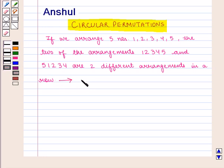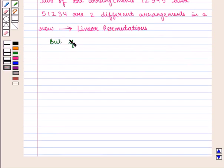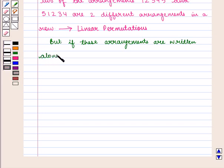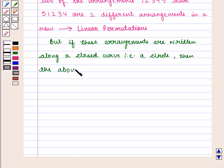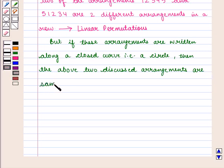This type of permutation is known as linear permutations. But if these arrangements are written along a closed curve, i.e., a circle, then the above two discussed arrangements are the same.